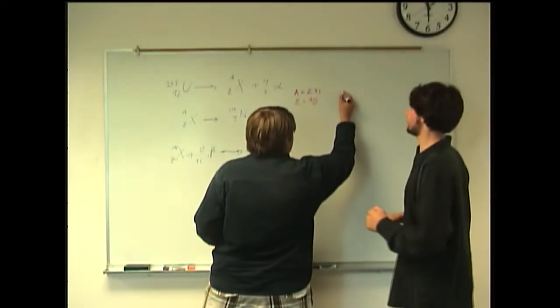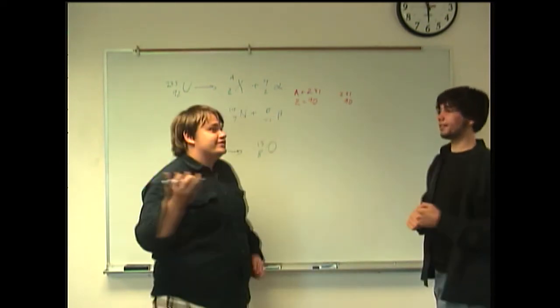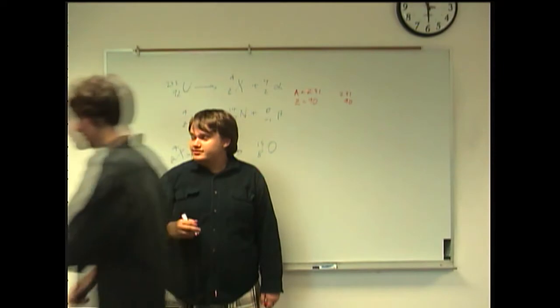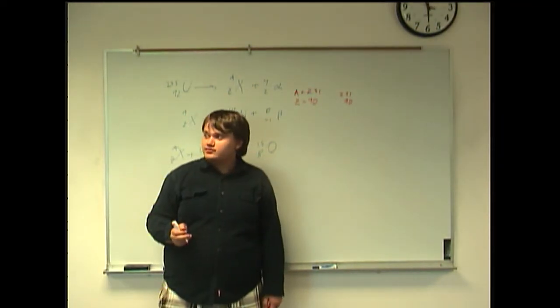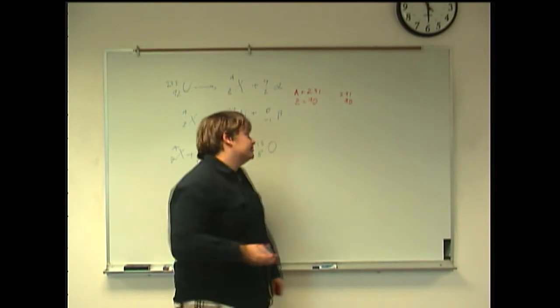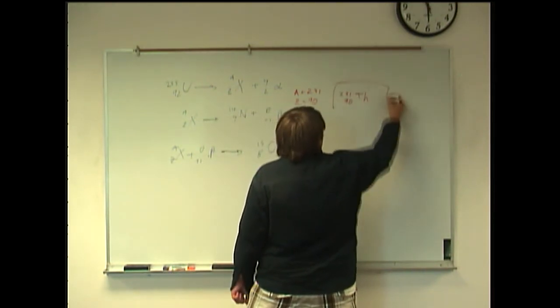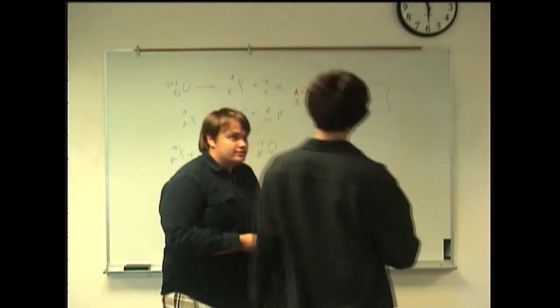All right, so 231 and 90. Now, if you could go and look what atomic number 90 is. I'll be right back with that. Go ahead and call it out. Thorium. Thorium. Thank you very much. So, Th-231, 90 Th, and that's going to be our answer. Okay.